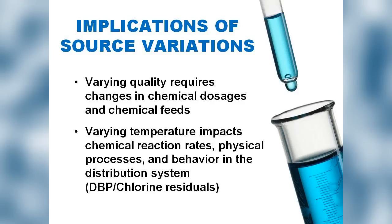So we have information from around our states relative to changes in water quality. In the treatment facility, varying quality requires changes in chemical dosages and feeds. We might bring in certain chemicals only during certain times of year — for example, powdered activated carbon for taste and odor control during those events, then back off when not needed. Varying temperatures also impact reactions in the plant and distribution system behavior, including the ability to disinfect — reaction rates for killing organisms are faster when water is warmer.